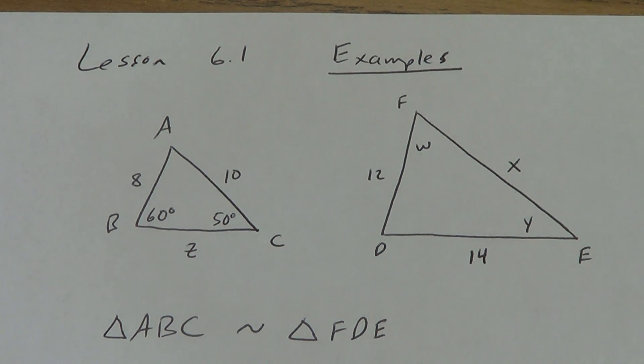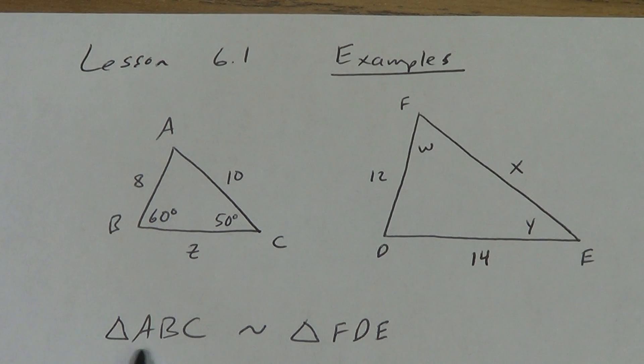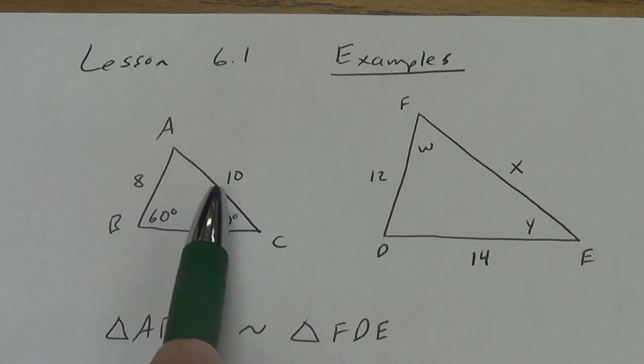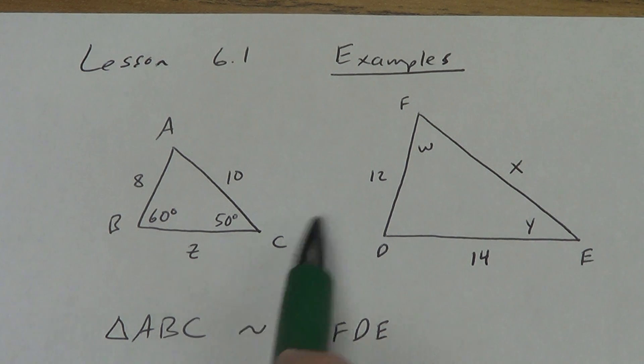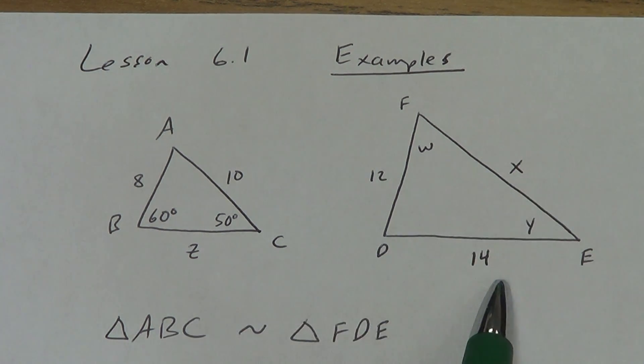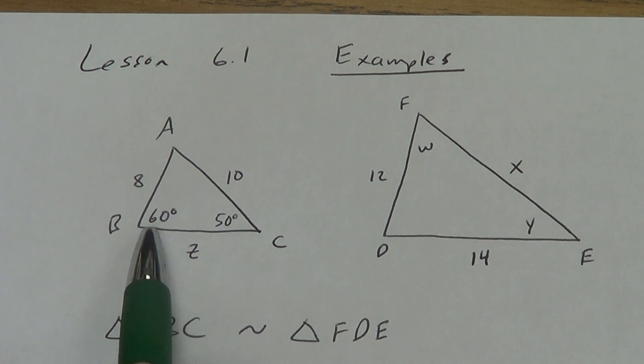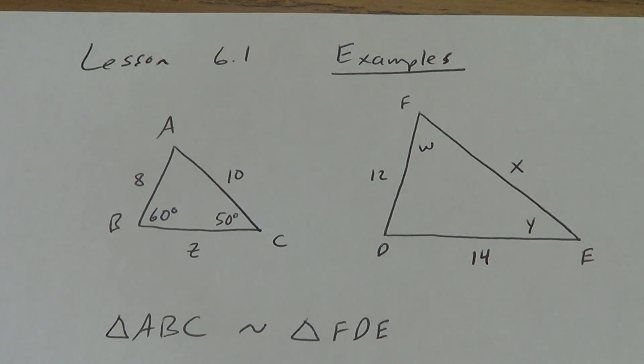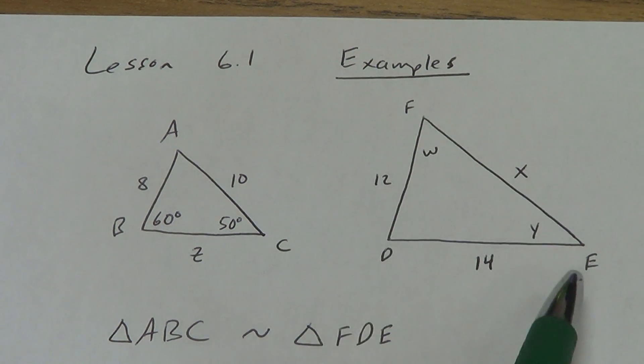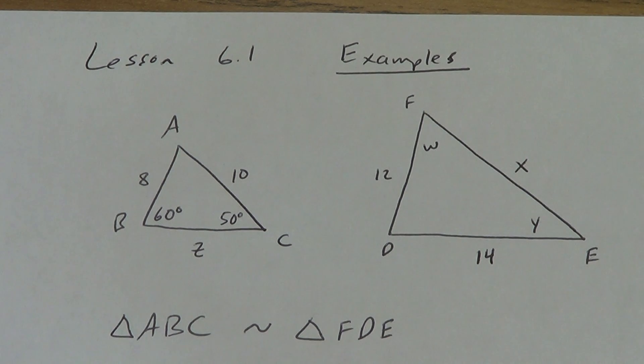I want you to go ahead and copy this one down first. So, I've got triangle ABC, and I have triangle FDE. They are similar. Remember, that's what this symbol means right here, this symbol means they're similar. And I've got some side lengths, 8, and 10, and Z, and 12, and X, and 14, and I've got some degrees, 60, and 50, and so on. We're going to find all these missing things, the W, and the X, and the Y, and the Z.